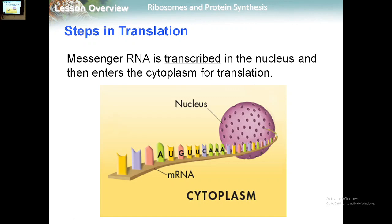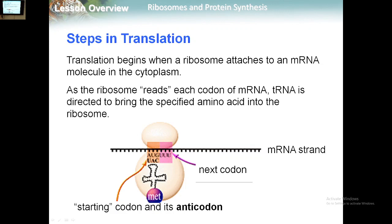The mRNA is transcribed in the nucleus, exits the nucleus, and is released to the cytoplasm for the translation process. Translation begins when a ribosome attaches to an mRNA molecule in the cytoplasm.